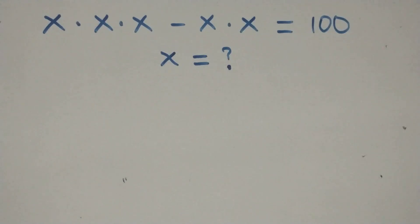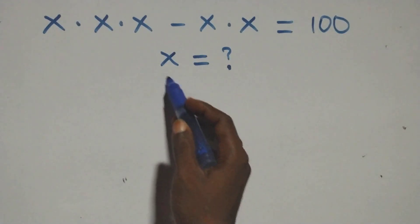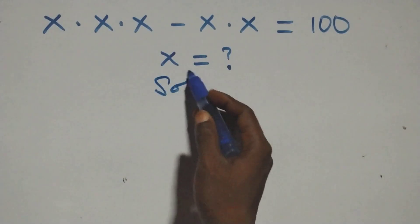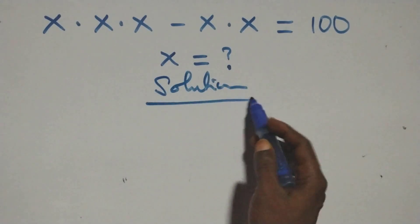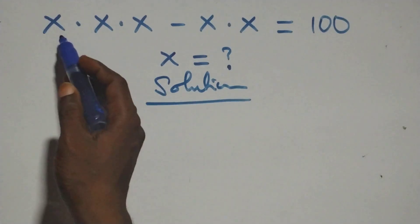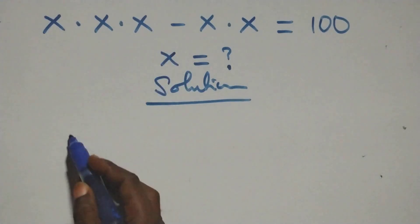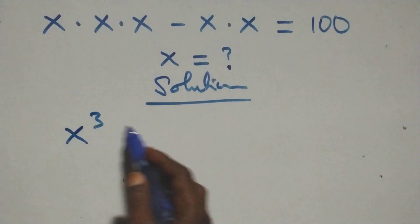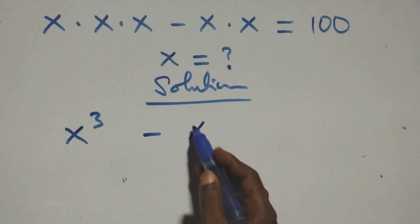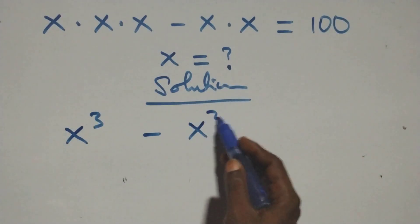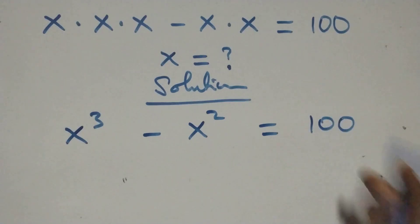Hello, you're welcome. How to solve this nice algebra problem — the solution from here. We can multiply this directly: x times x times x, that's x raised to power 3, minus x times x, that's x squared, equals to undrained.